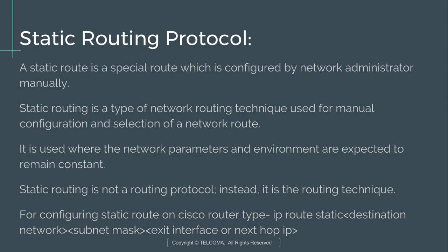On a Cisco router, type the command: ip route static, followed by the destination network address, the subnet mask, and the exit interface or the next hop IP. This is the interface through which the packet will be forwarded in the network. Type this command in the Cisco router command window to configure static routing.